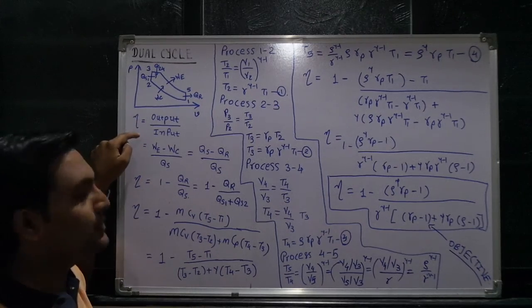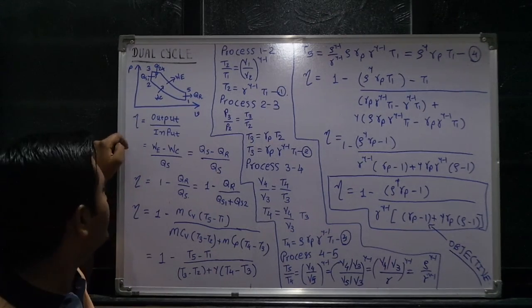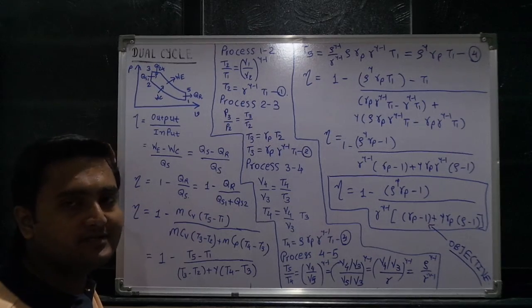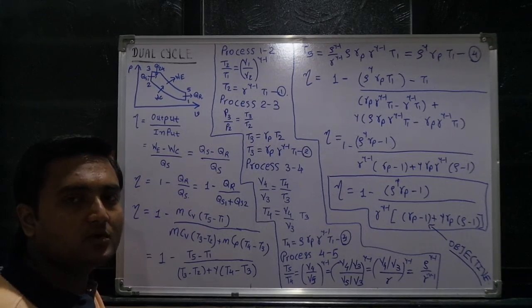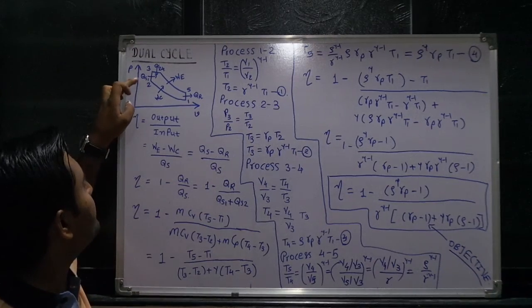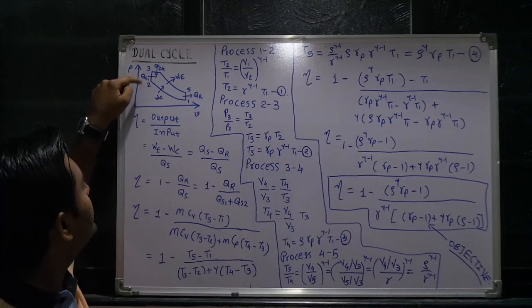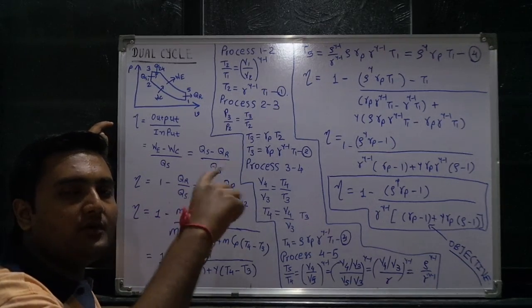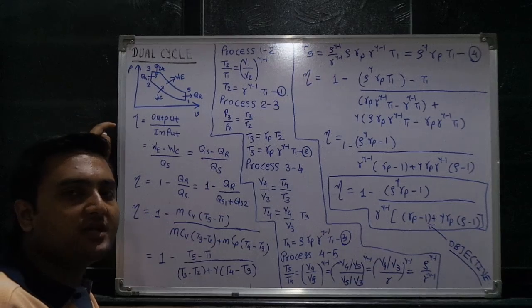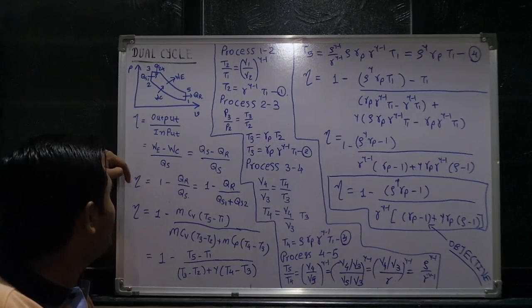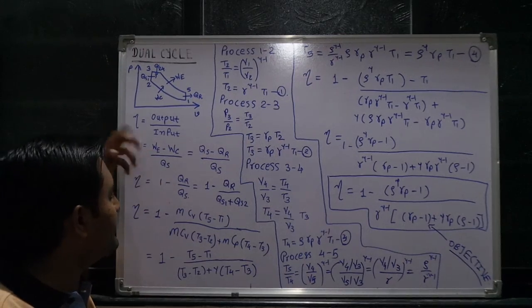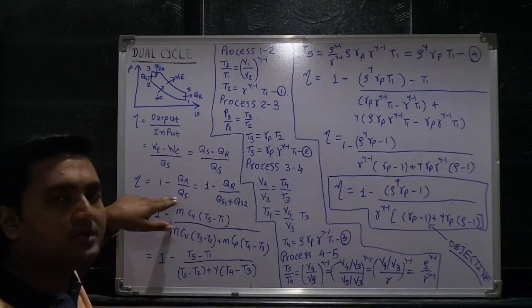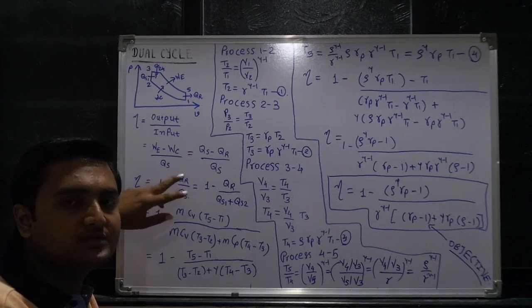Efficiency is equal to output divided by input. The output is work done by the system minus work required by the system, divided by input, which means total heat supply — the summation of Qs1 plus Qs2. During the 2 to 3 process, heat addition Qs1 is added, and during 3 to 4 process, heat addition Qs2 is added. So efficiency equals 1 minus QI divided by Qs, which is also equal to 1 minus QI divided by Qs1 plus Qs2.